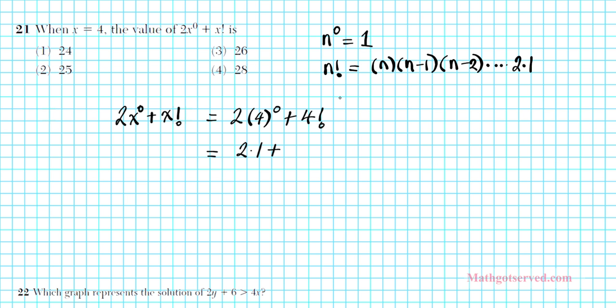Let's evaluate the sum of these two terms. 2 times 4 to the 0th power using the order of operations, we have to resolve the exponent first. So 4 to the 0th power using this formula is going to be 1. So we have 2 times 1 plus 4 factorial. To find 4 factorial, we'll multiply the product of the numbers from 4 to 1. So 4 times 3 times 2 times 1. We have 2 times 1 is 2 plus 4 times 3 is 12 times 2 is 24. 2 plus 24 equals 26. So we can clearly see that our answer is option number 3.